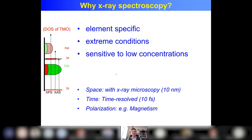I start by answering the question: why do x-ray spectroscopy at all? There are three short reasons. One is element specific — all the information that you get, you get for one element. That's a big difference with, for example, optical spectroscopy.